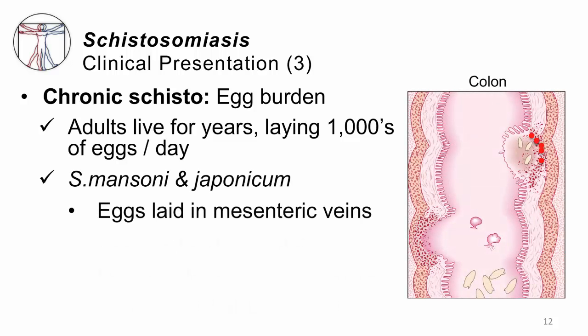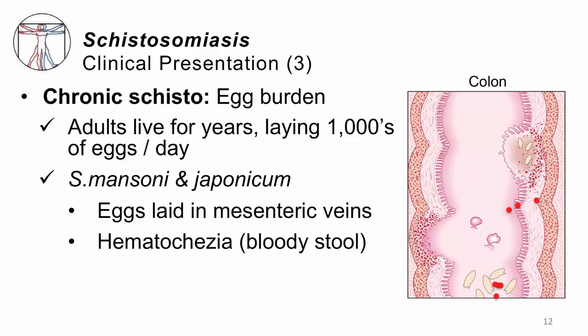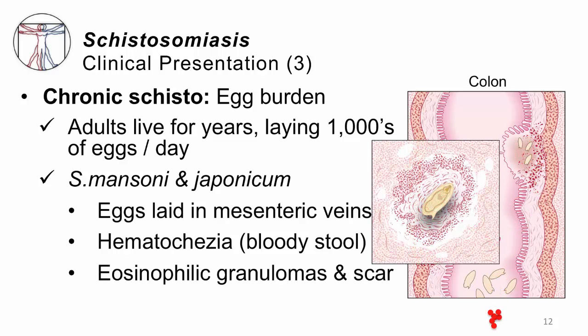Finally, if this process goes on over time, there's so much turnover on the lining of the bladder wall that you can end up with cancer — a squamous cell carcinoma. Most cancers of the bladder are transitional cell, but the cancer related to schistosomiasis is classically a squamous cell carcinoma. In the case of Schistosoma mansoni or japonicum, it's a very similar story except we're talking about the colon rather than the urinary bladder. As the eggs get out of the colon wall into the feces, they can injure the colon wall and you can end up with hematochezia — blood in the stool. The wall of the colon can become scarred down with eosinophilic granulomas.